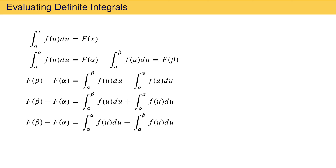Using another property of definite integrals, we can combine these into one integral because a is an intermediate value between alpha and beta. This gives F at beta minus F at alpha equal to the integral from alpha to beta of f of u du. This result provides a way to evaluate a definite integral: first evaluate the indefinite integral, then evaluate it at the bounds of integration and take the difference in the results.